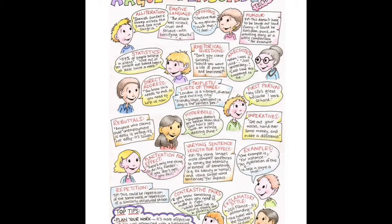Triplets — also called a list of three or patterns of three — involve three words that essentially mean the same thing, emphasizing the same idea three times. For example: 'London is a vibrant, diverse and exciting place' — the triplets are vibrant, diverse, exciting. And: 'Friendly, loyal, intelligent — a dog is the perfect pet.'